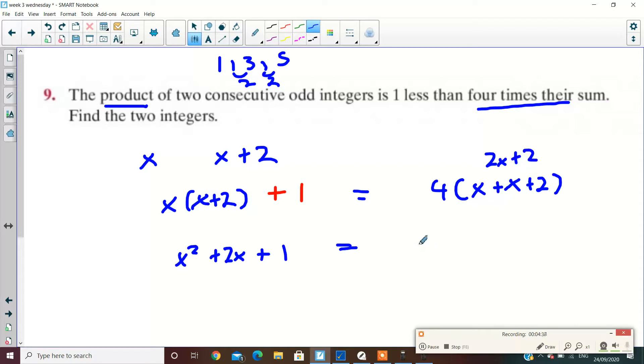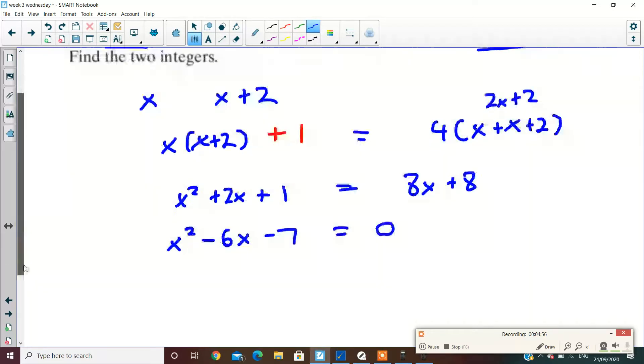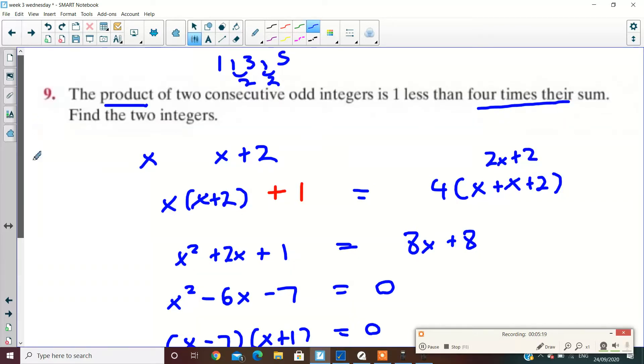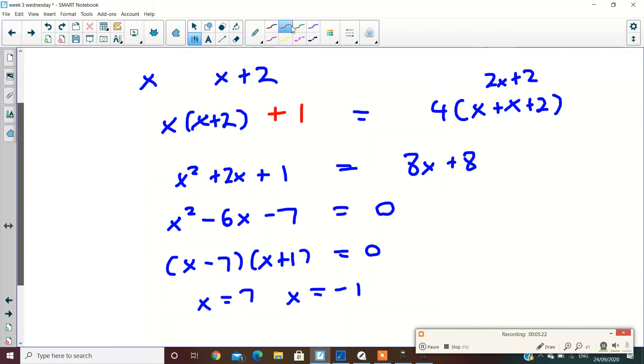Now you're going to get x squared plus 2x plus 1. And this is 2x plus 2 in here, so it's going to be 8x plus 8. Multiply it out, we're going to get x squared minus 6x minus 7 equal to 0. And what do we have here then? x minus 7 and x plus 1 equals 0. x equals 7 and x equals minus 1. Now, is either answer ruled out?